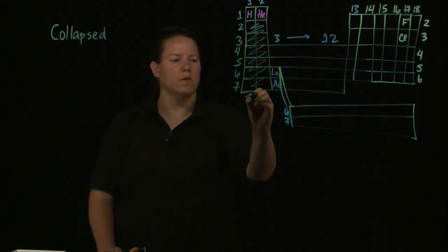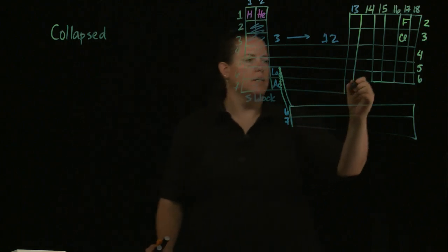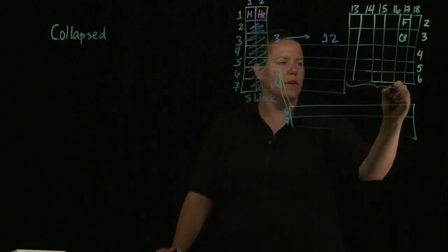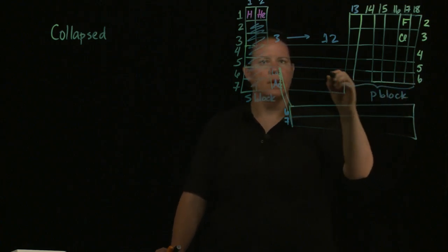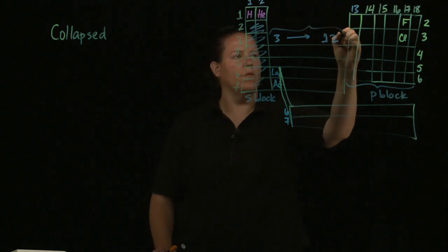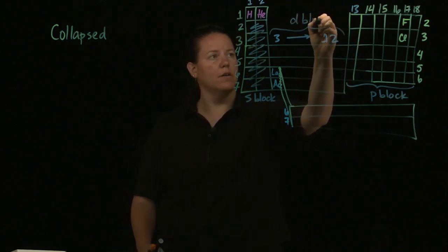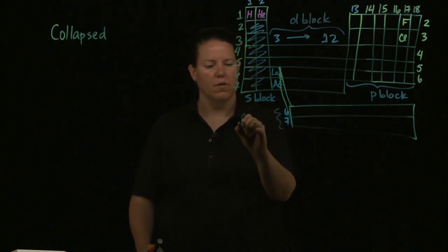So like, for instance, the first two groups are the S block, right? The last six groups on the periodic table from here to here is the P block. Over here, 3 through 12, otherwise known as the transition metals, D block, and these bottom two are the F block.